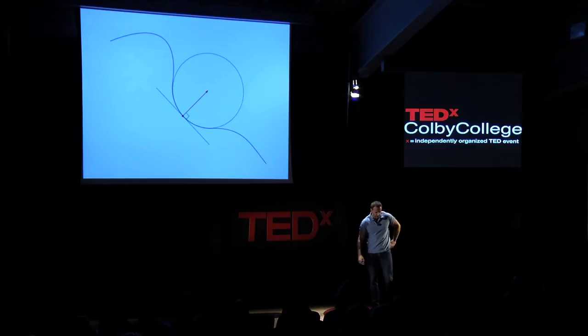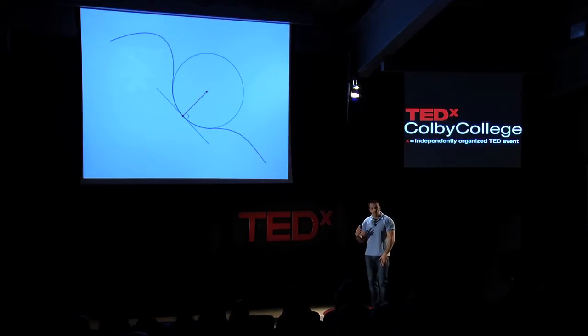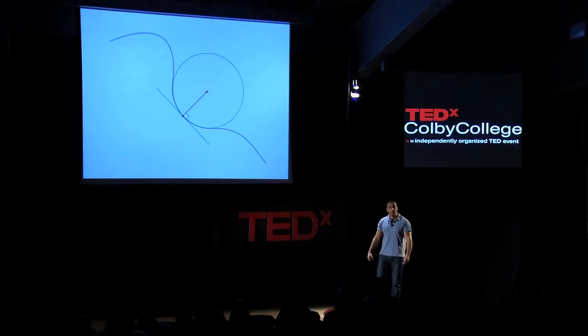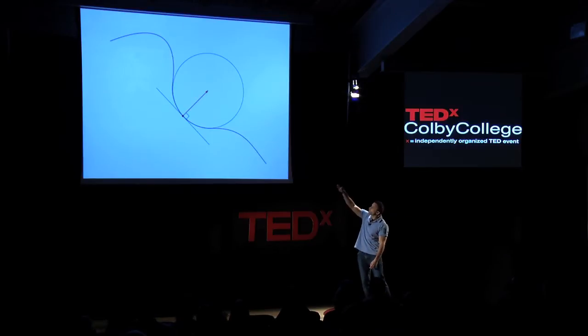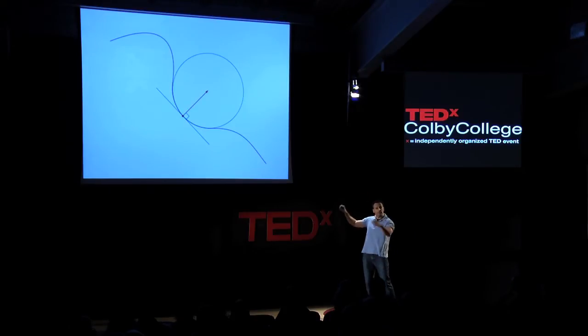Now let's do a little thought experiment. Imagine that you and I are tiny entities confined to live on that curve. Would there be a way we could figure out that we live on this curve rather than a straight line? The answer is no. You can only measure the curvature at each point of this curve if you know how this curve sits in the surrounding plane.